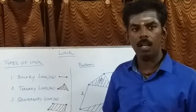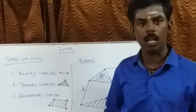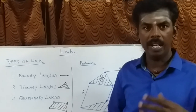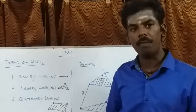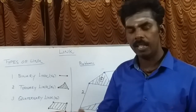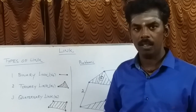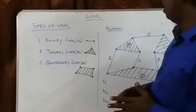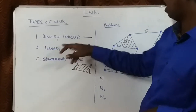We discuss about the link - a mechanism of a number of resistant bodies, out of which some may be related to others. A resistant body or group of resistant bodies with rigid connection preventing their relative movement is known as a link. Let us discuss about the types of links. There are three types: binary link, ternary link, and quaternary link.